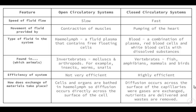In open circulatory systems, cells and organs are bathed in hemolymph, so diffusion occurs directly across the cell surface. In closed circulatory systems, blood remains contained in capillaries — only one cell thick — when it contacts cells, so diffusion occurs across the capillary surface, allowing gas exchange, nutrient delivery, and waste removal. This table provides a clear comparison of the two circulatory systems with named vertebrate and invertebrate examples, and that brings us to the end of this video.